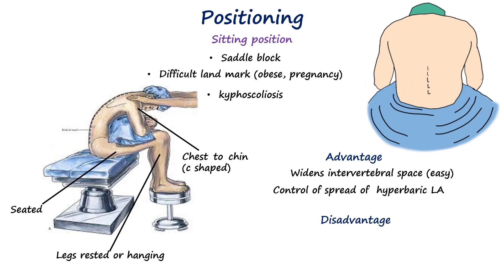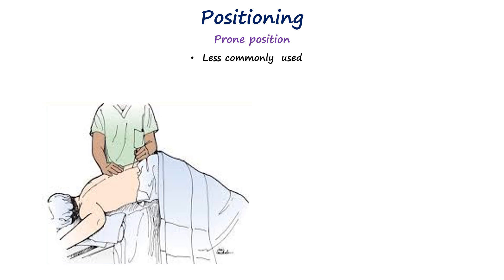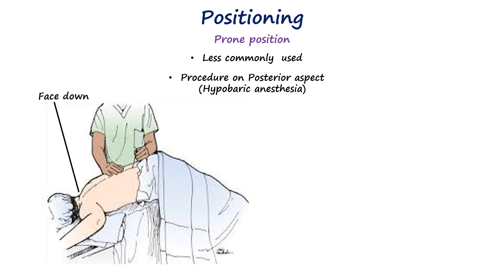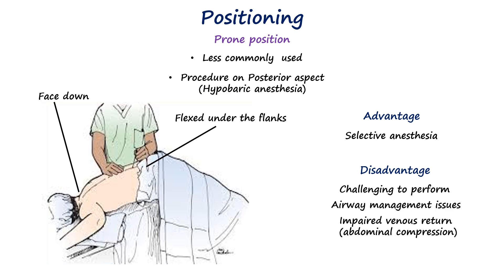However, the sitting position may be uncomfortable for elderly or frail patients and carries a higher risk of postural hypotension. The prone position, though less commonly used, is suitable for hypobaric spinal anesthesia, especially for procedures on the perineum or posterior aspect of the body. The patient lies face down on the operating table, which is flexed under the flanks just above the iliac crests to facilitate the spread of the anesthetic. Hypobaric solutions are lighter than cerebrospinal fluid and therefore rise against gravity to the non-dependent or upper part of the subarachnoid space, allowing anesthesia to be localized to the desired posterior region. Although this avoids repositioning after injection and provides selective anesthesia, it can be technically challenging, requires careful airway management, and may impair venous return due to abdominal compression.